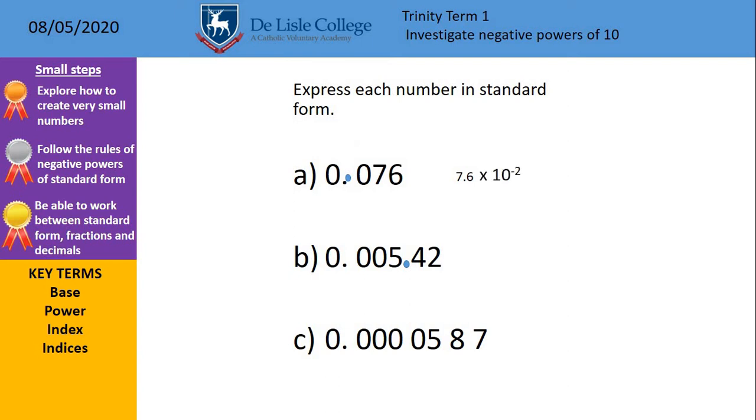Next one, 0.00542. Get your number between 1 and 10, 5.42. Then, how far have we moved the decimal point? We have gone 1, 2, 3 this time. So, it's 10 to the power of minus 3. And the last one, we're going to go with our number between 1 and 10 is 5.87. How far has decimal point moved? 1, 2, 3, 4, 5 places. So, times 10 to the power of minus 5. Make sure you have got these examples down and those on the previous slide, you need to get that information down where it says copy me as well please.